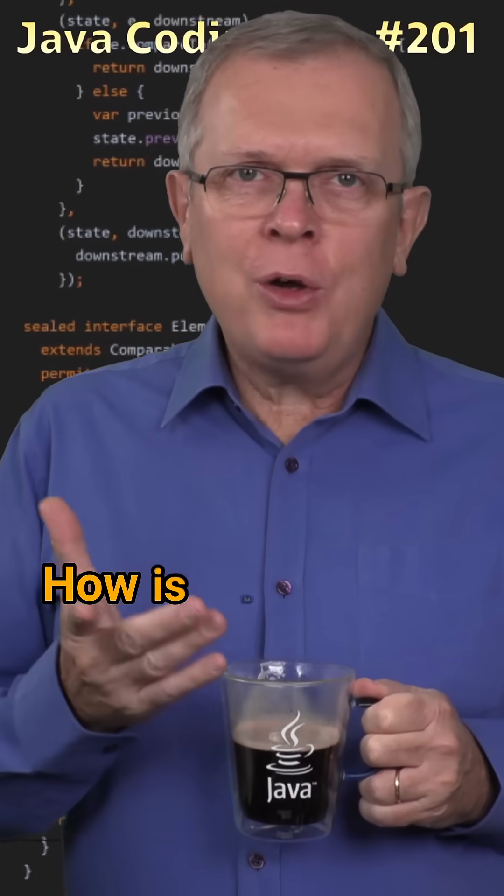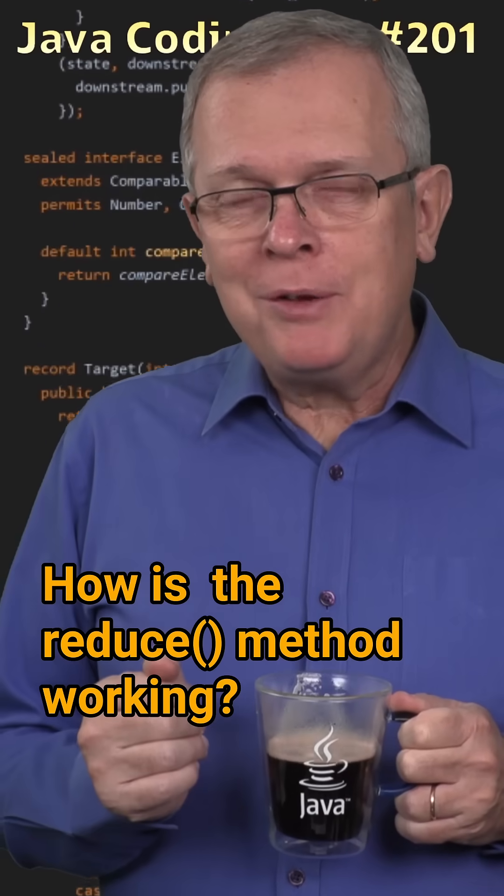Question 201. How is the reduce method working? Short answer, it reduces the elements of the stream.